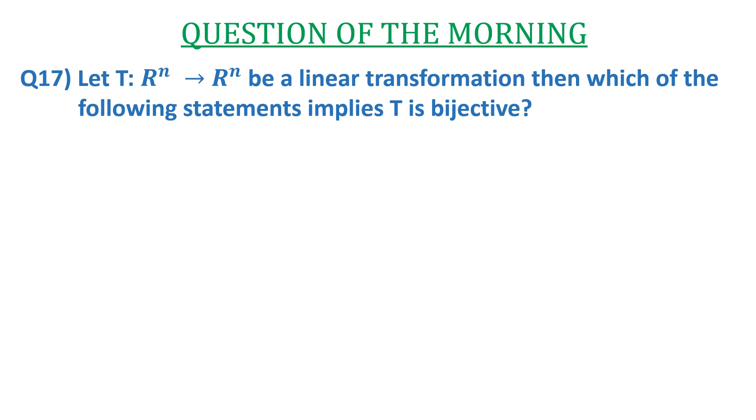The question is: let T: R^n → R^n be a linear transformation, then which of the following statements implies T is bijective? The options are: A) Nullity(T) = n, B) Rank(T) = Nullity(T) = n,